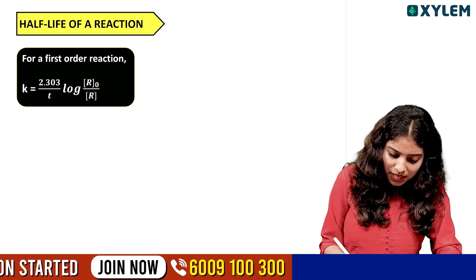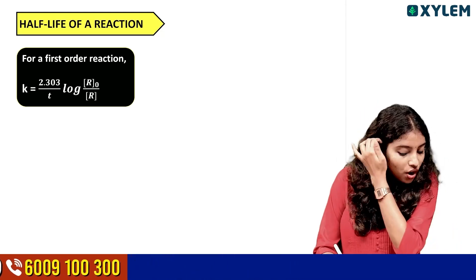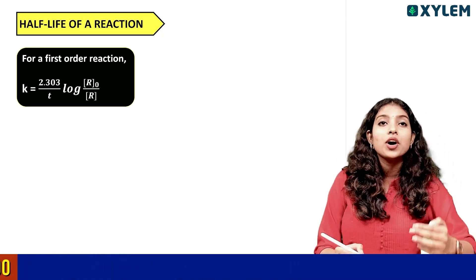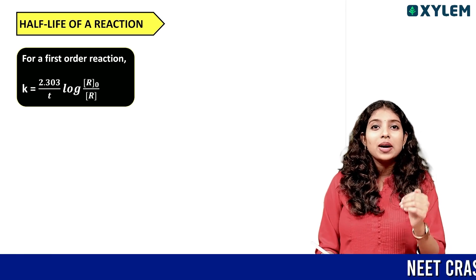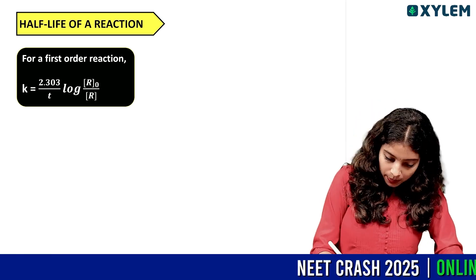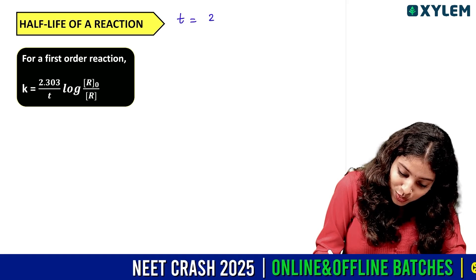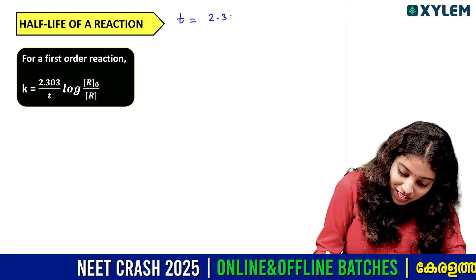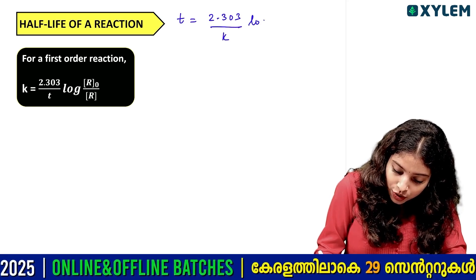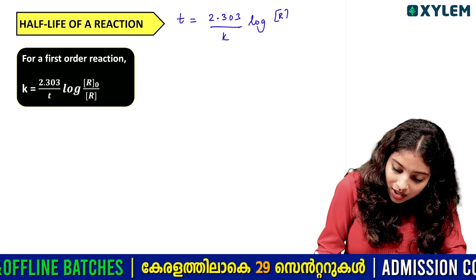Now let's see the first-order reaction derivation. We can see the first-order reaction rate constant equation: K is equal to 2.303 divided by T, log R₀ by R. So, T is equal to 2.303 divided by K, log R₀ by R.